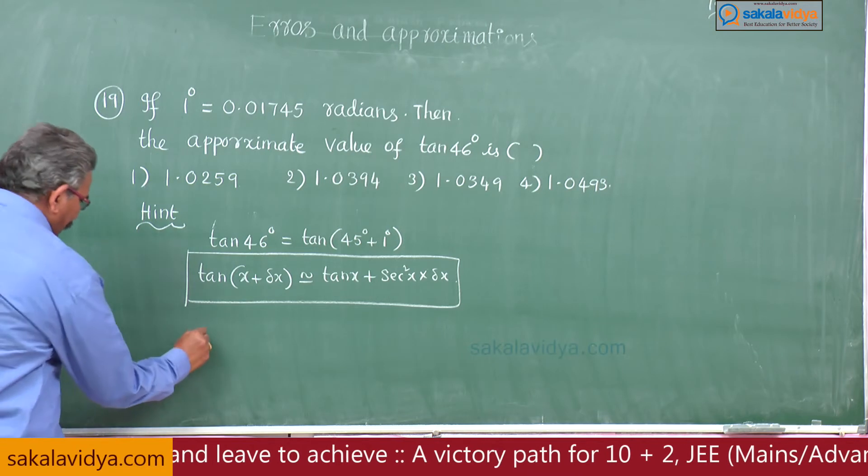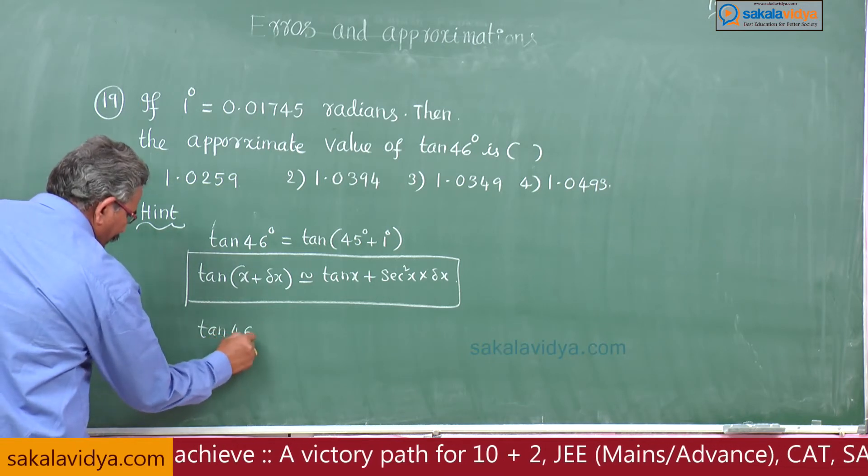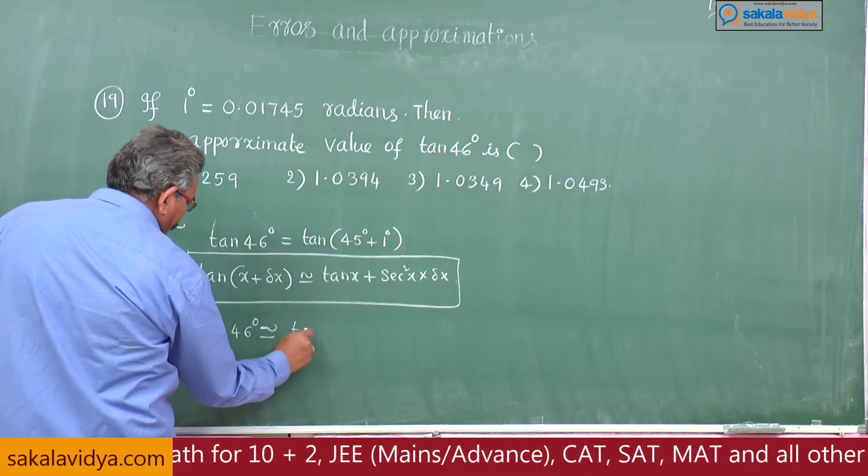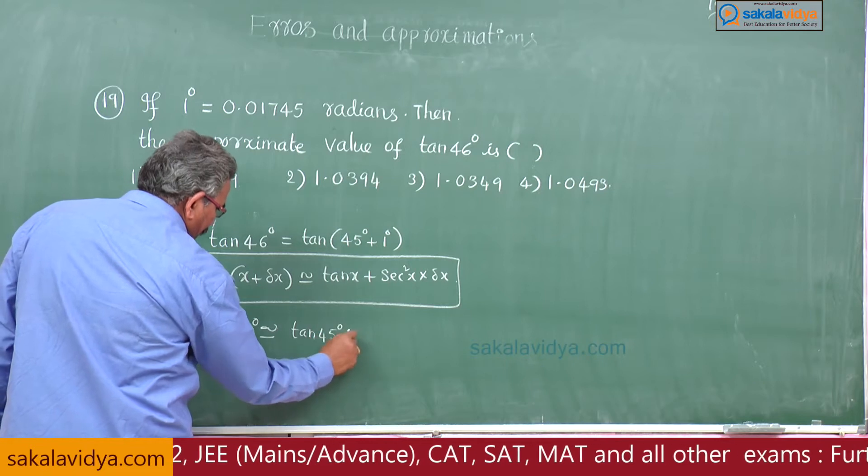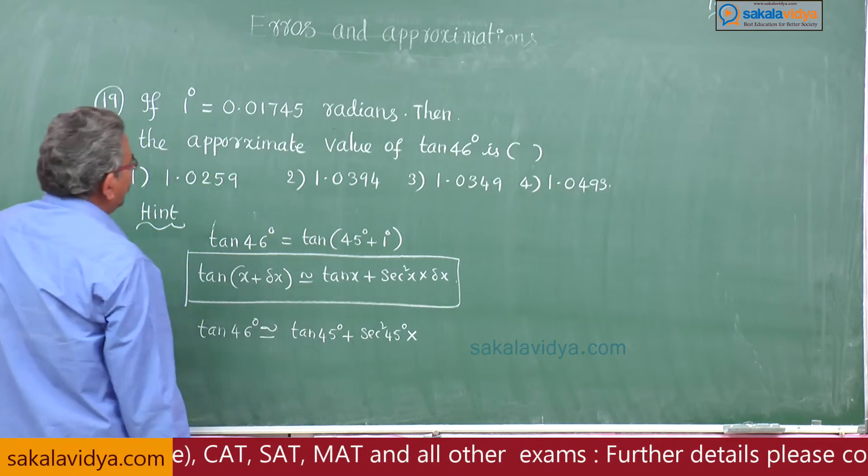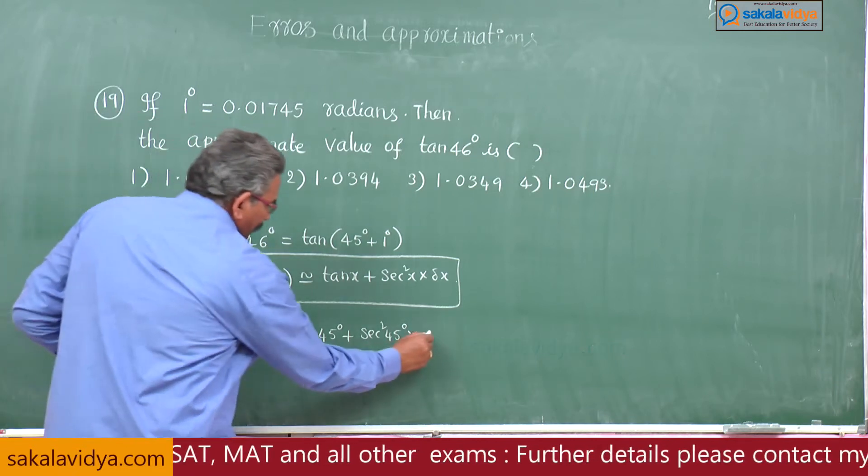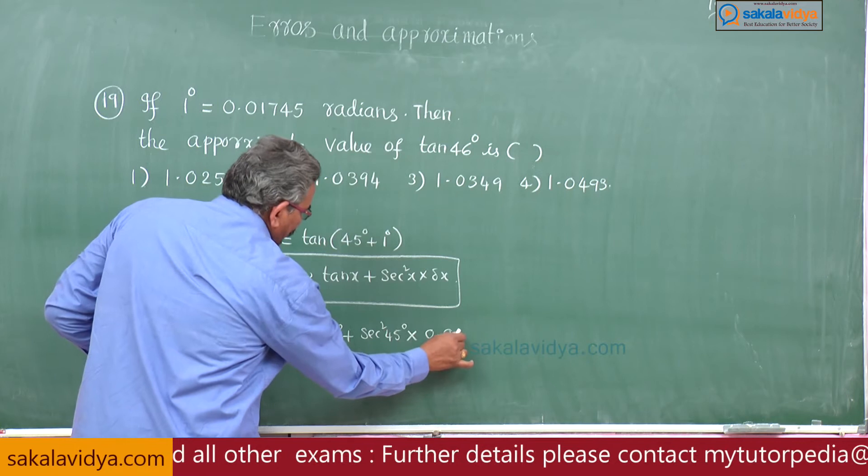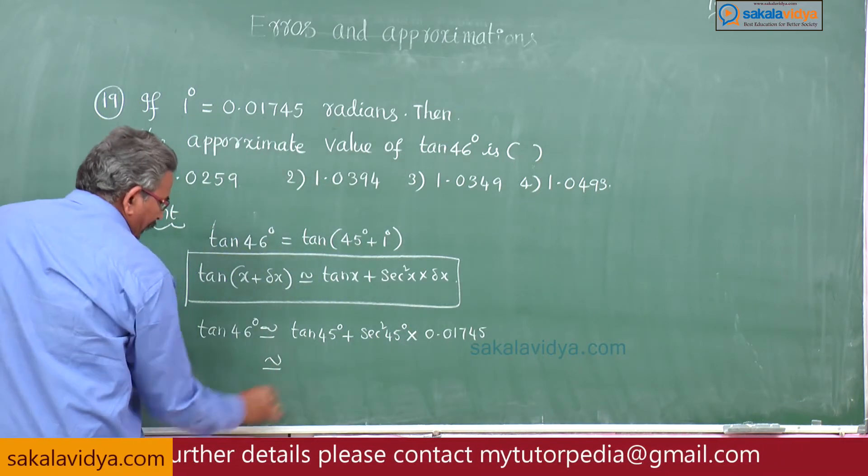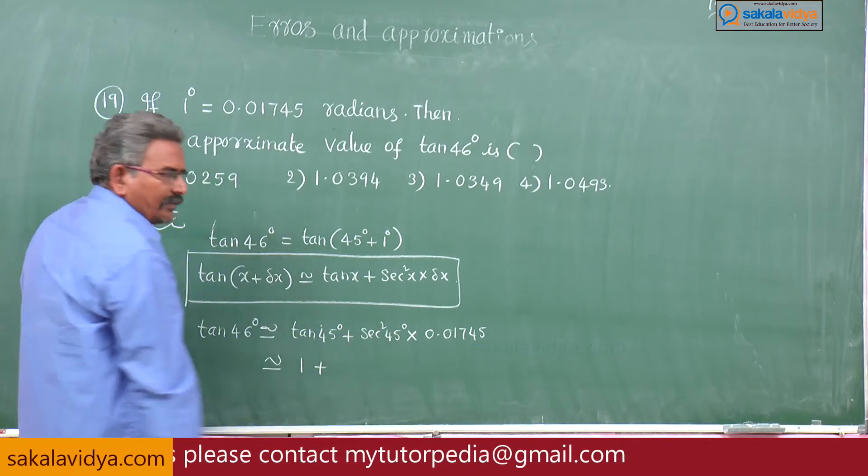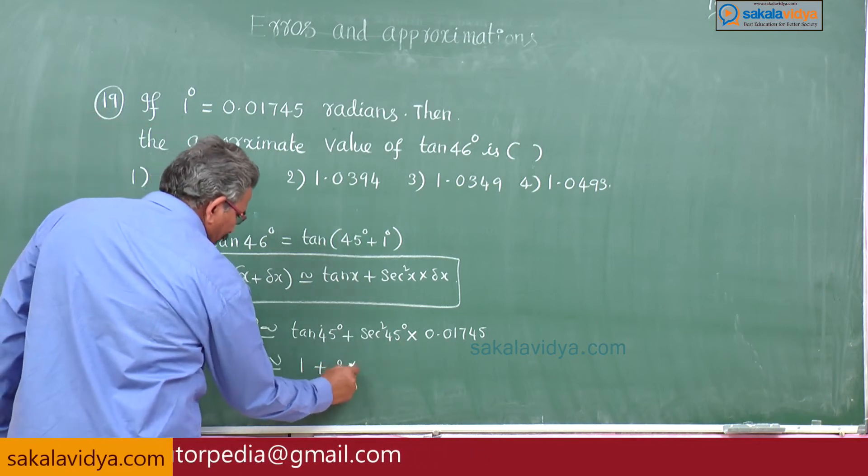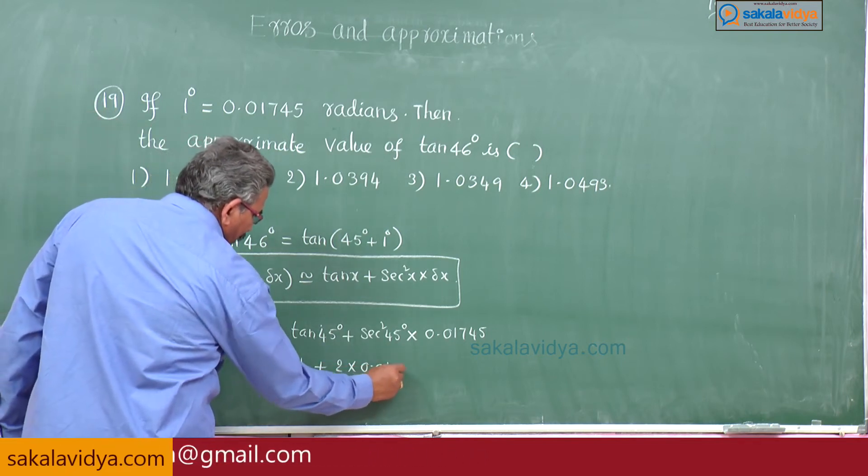Now, tan 46 degrees is approximately equal to tan 45 plus secant square 45, delta x is 1 degree, 1 degree is already given as 0.01745. Approximately equal to tan 45 is 1 plus secant 45 is root 2, root 2 square is 2 into 0.01745.